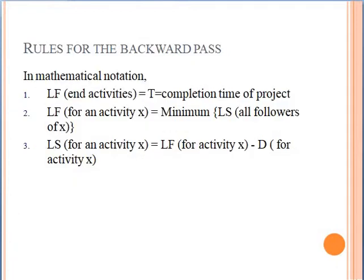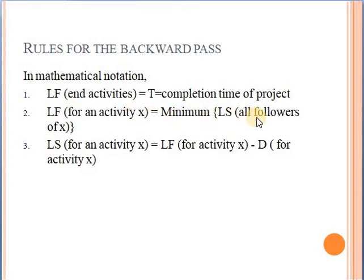We have some rules for the backward pass. Our starting point will be the end activity — the completion time of the project that we got from the forward pass calculations — unless we have a constraint, such as you must deliver the project at week 30. If you have no constraint in the contract, then you begin with T, the completion time from the forward pass. The latest finish of any activity will be the minimum of the latest start of all its followers. The latest start of any activity is the latest finish minus the duration of the activity.